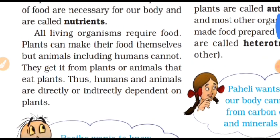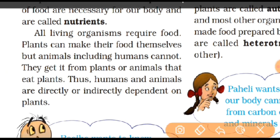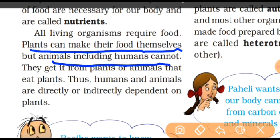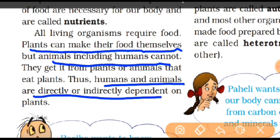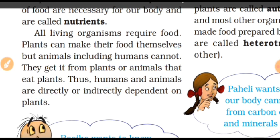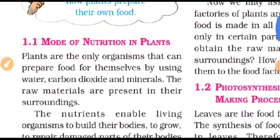Human beings are directly or indirectly dependent on plants. Plants can make their food themselves, but animals and human beings are directly or indirectly dependent on plants. Next topic is the mode of nutrition in plants.